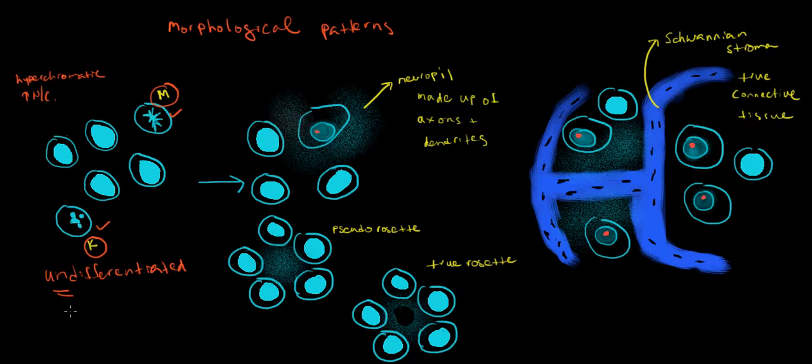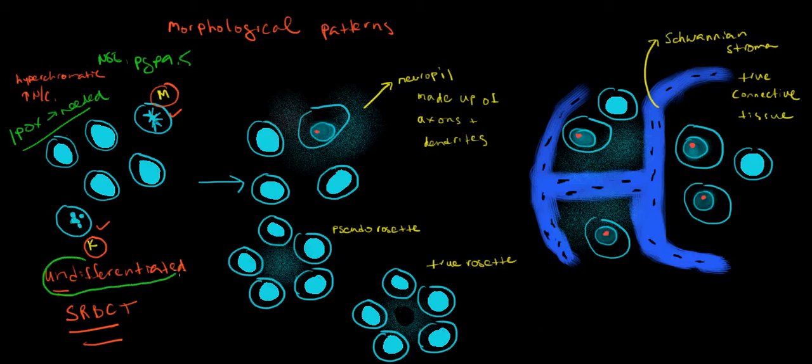This is a pattern. This is a true small round blue cell tumor because the pathologist cannot make the diagnosis on the basis of light microscopy alone. You need to do various tests to convince yourself that it really is a neural type of phenotype. You could do markers like NSE or PGP 9.5. In other words, you need antibodies. Immunoperoxidases are basically needed by the pathologist to make a diagnosis. If a pathologist is looking at a tumor composed of these small round blue cells and it turns out to be within the neuroblastoma family, it could very well be an undifferentiated neuroblastoma.